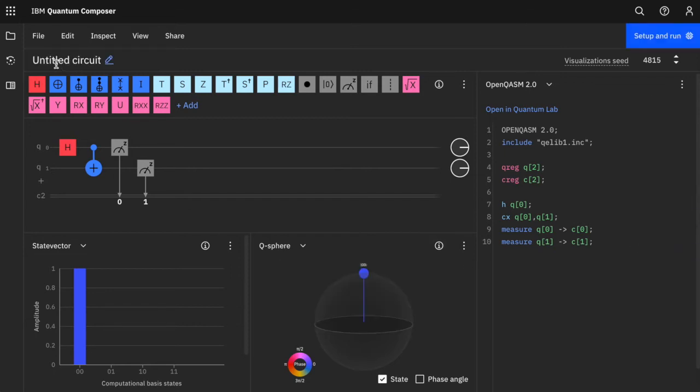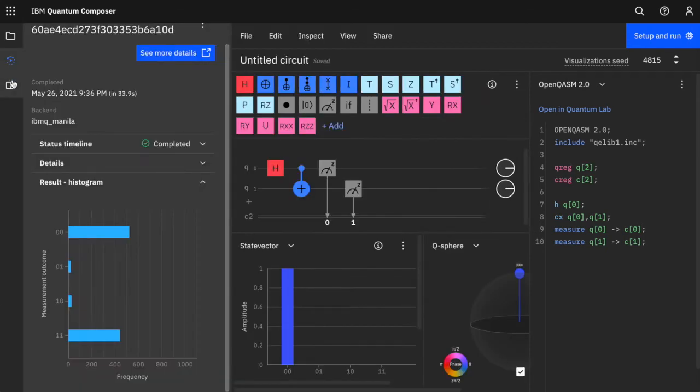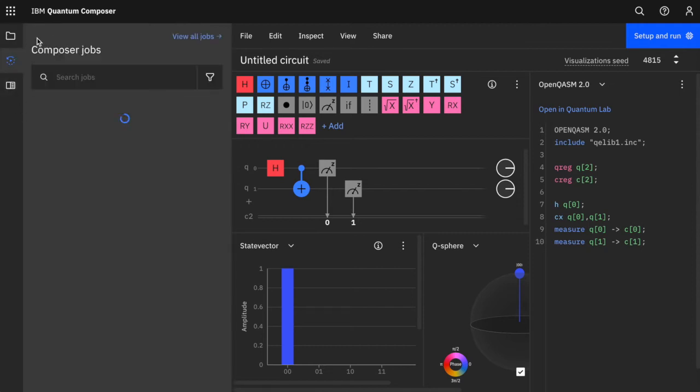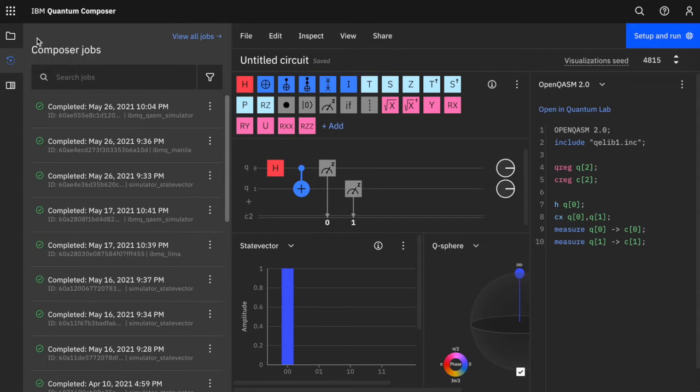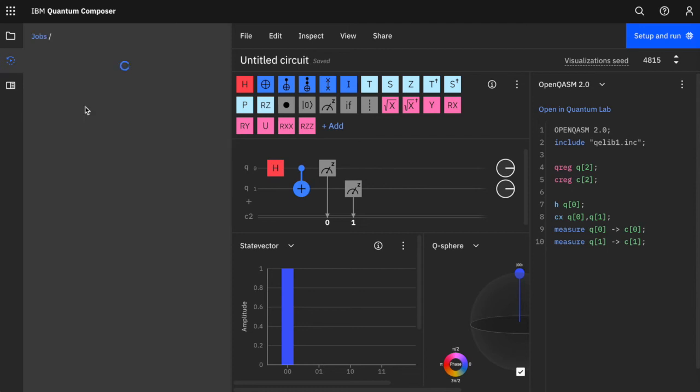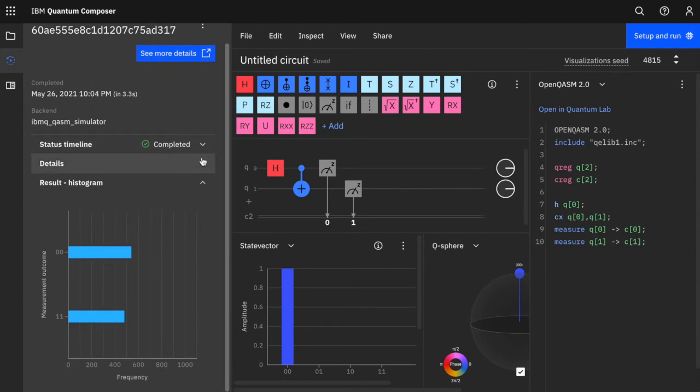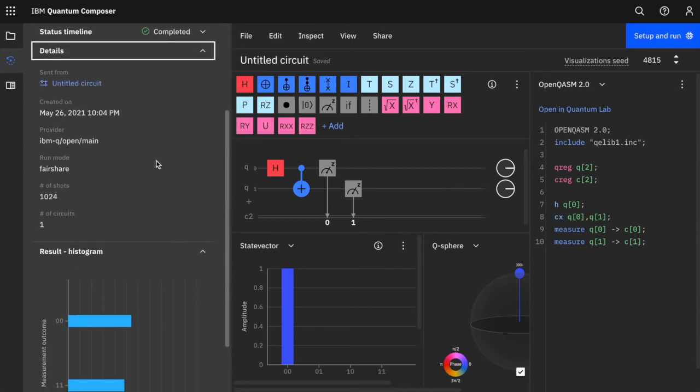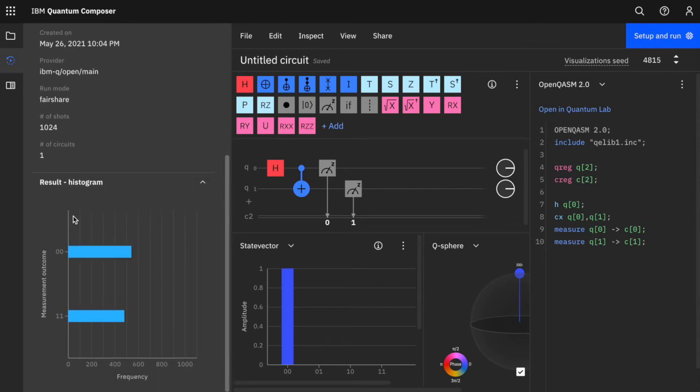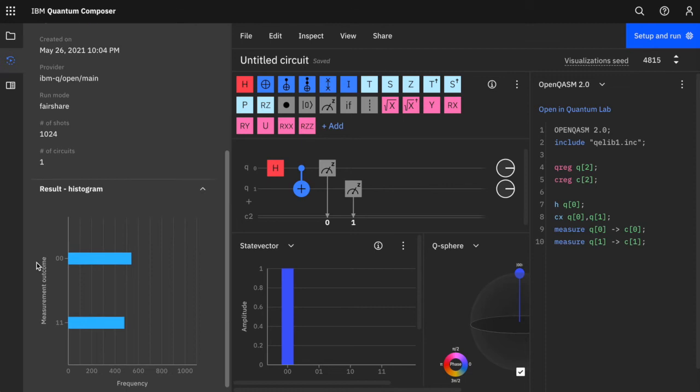So let's go look at the jobs. And we can see that the job has just completed. And then we can see the results of the job. We can see the details of what was run. Number of shots. Number of circuits. And we can see a histogram that was showing the probability of the results.